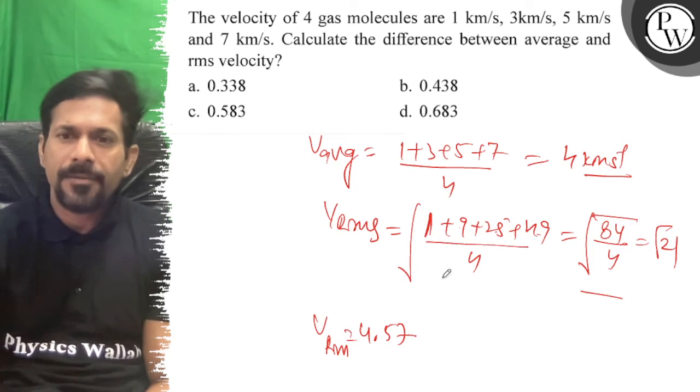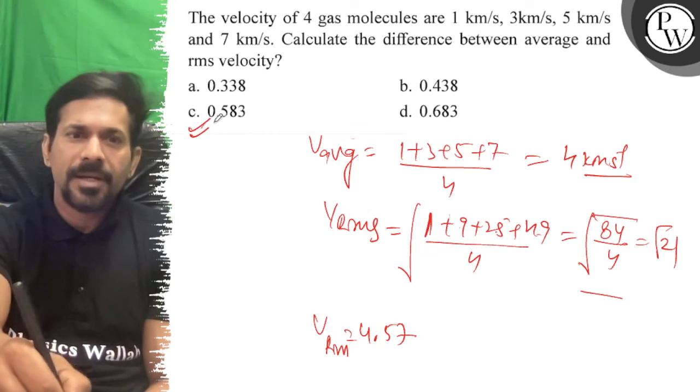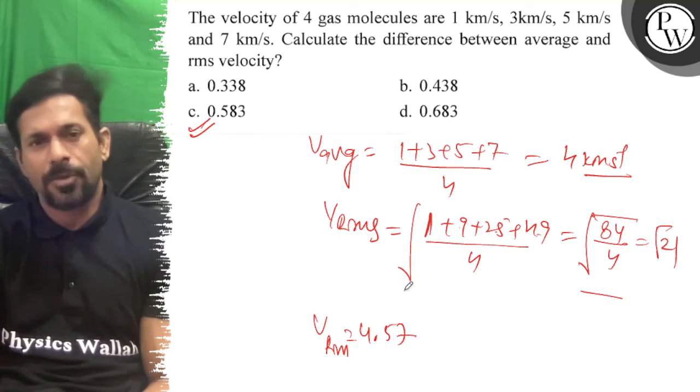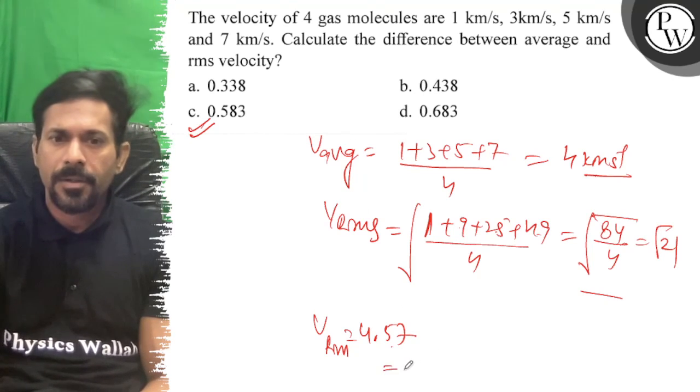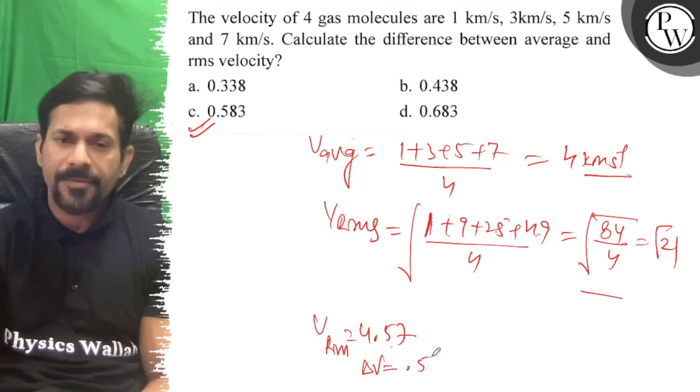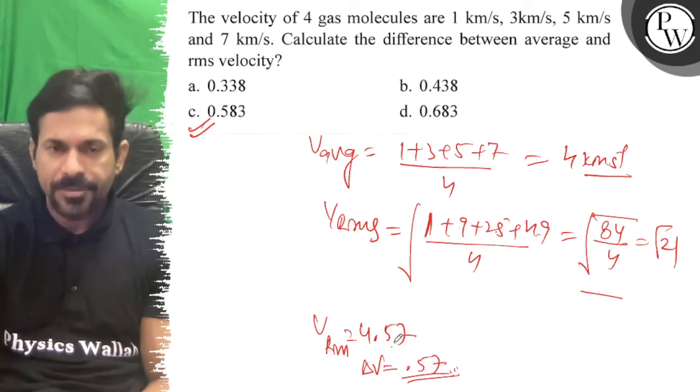The difference is approximately 0.858... So see option C is correct. The difference: 4 minus 4.57, so delta v is approximately 0.57. So see option C is correct, all the best.